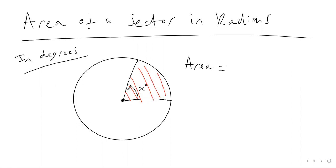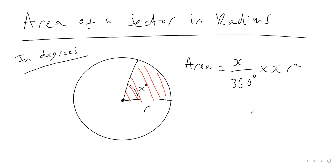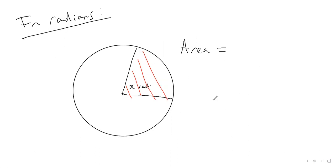To work out the area of a sector in degrees, it's your angle divided by 360 — out of the total 360 degrees in a circle — and then you times that by πr², your radius squared times π times this proportion. That gives you the area of your sector.